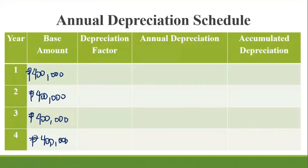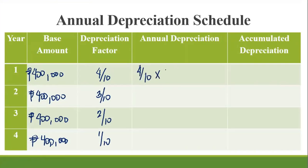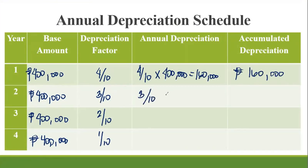The annual depreciation and accumulated depreciation: Year 1: 4/10 × 400,000 = 160,000 pesos; accumulated = 160,000. Year 2: 3/10 × 400,000 = 120,000 pesos; accumulated = 280,000. Year 3: 2/10 × 400,000 = 80,000; accumulated = 360,000. Year 4: 1/10 × 400,000 = 40,000; accumulated = 400,000 pesos.